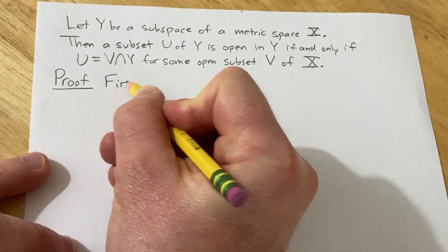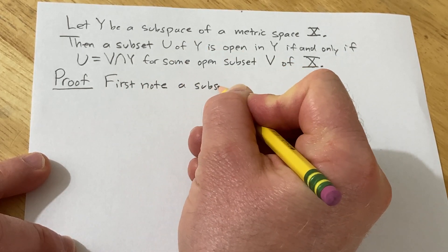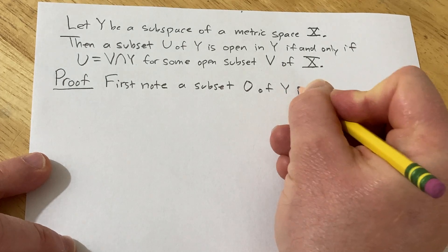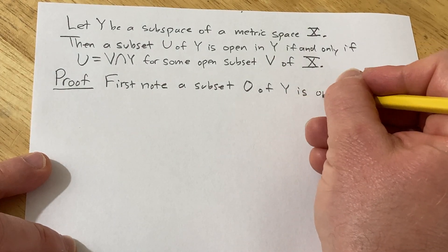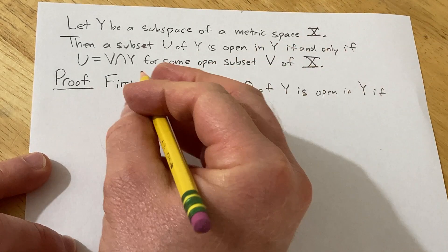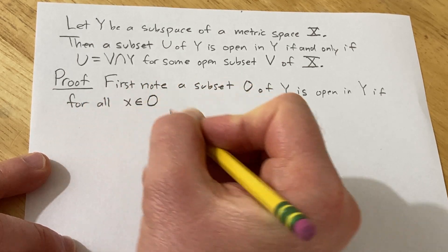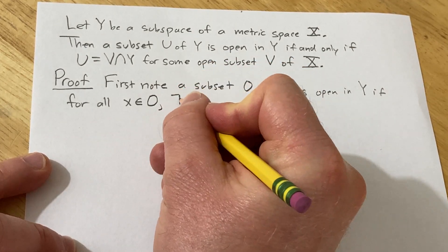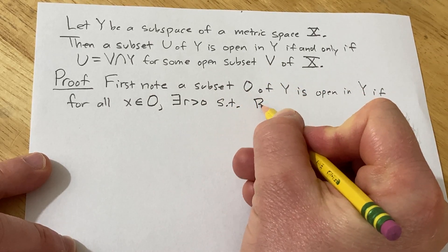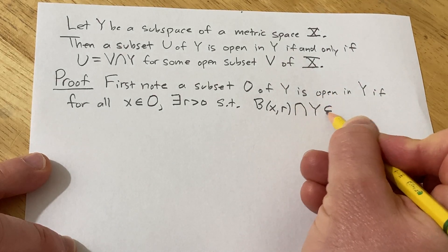First note: a subset — I'll use a different symbol — O of Y, is open in Y if for all x in O there exists some r greater than 0 such that the open ball centered at x of radius r, intersected with Y, is contained entirely in O.